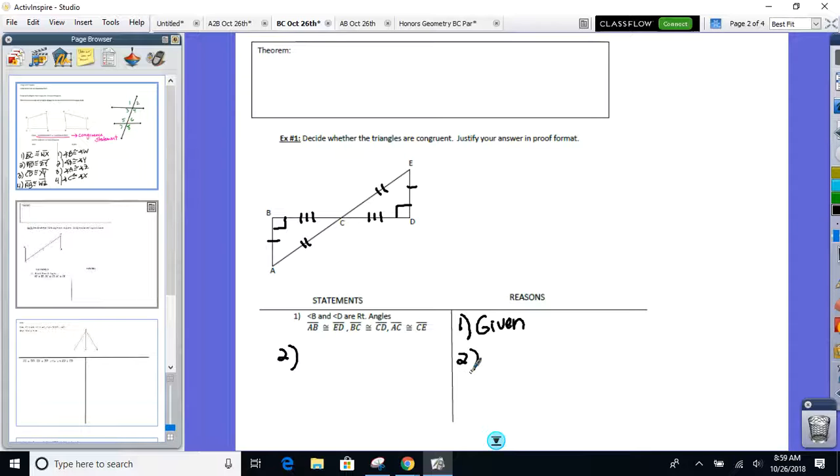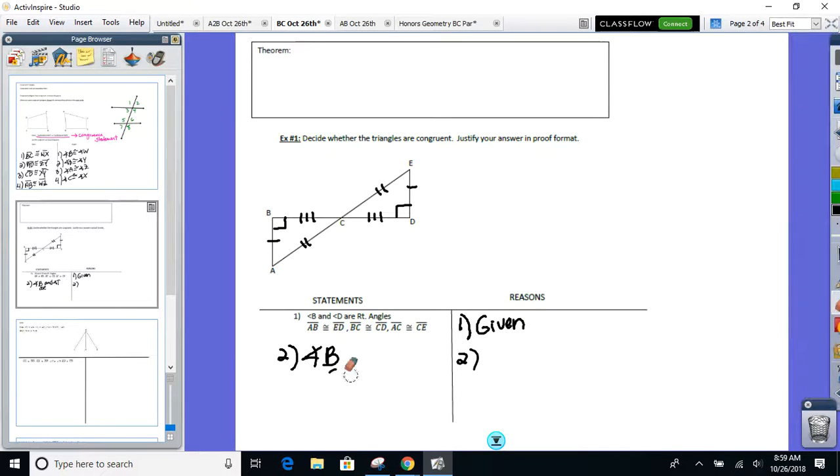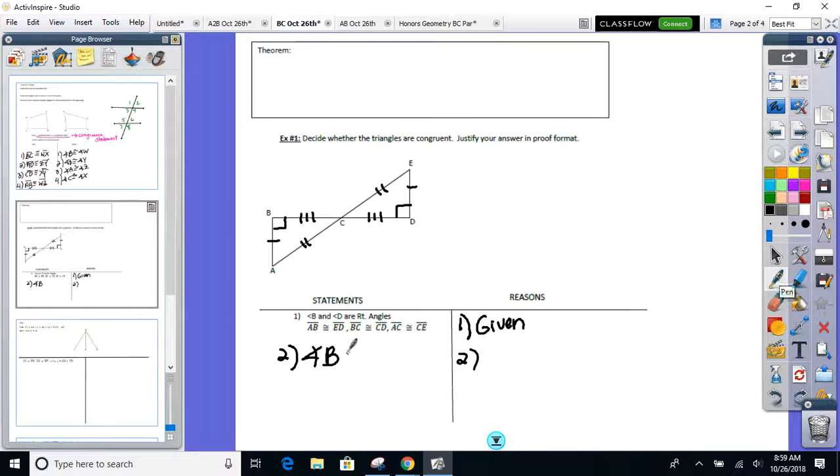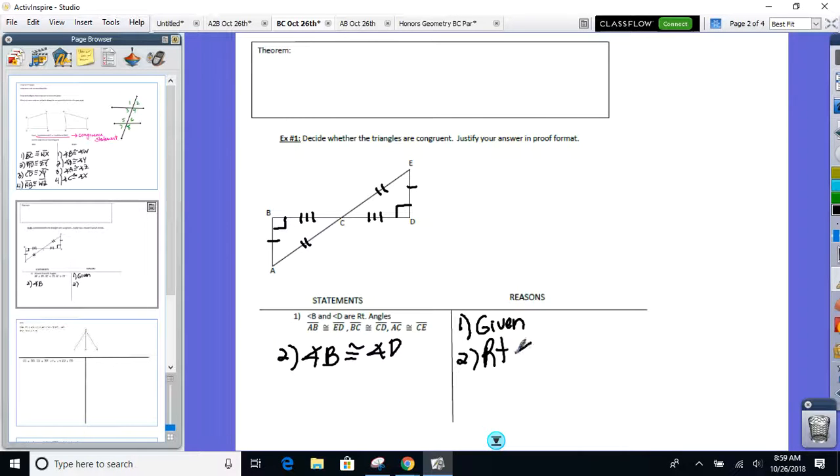Just because I put that darn box there, does that mean they're congruent? No, it's got to go in here. Just because you marked a little box on your diagram doesn't say they're congruent. No. You have to actually tell me angle B and angle D are congruent. Or I should just put the congruent sign. And this used to be a theorem I had up there, which said what? Right angles are congruent. Perfect.